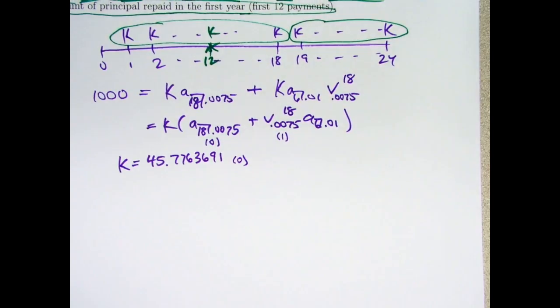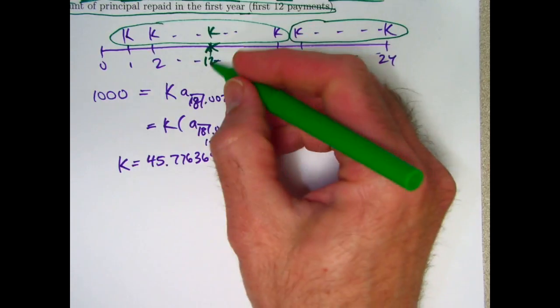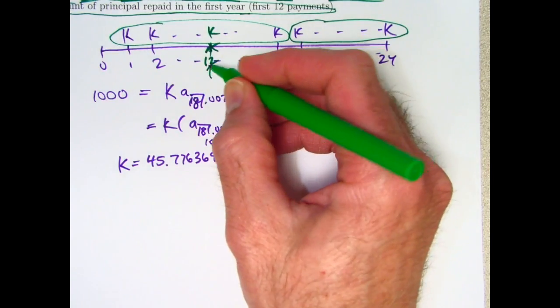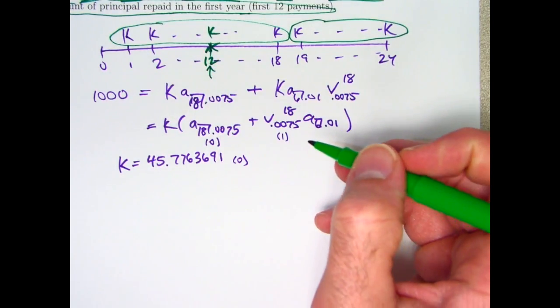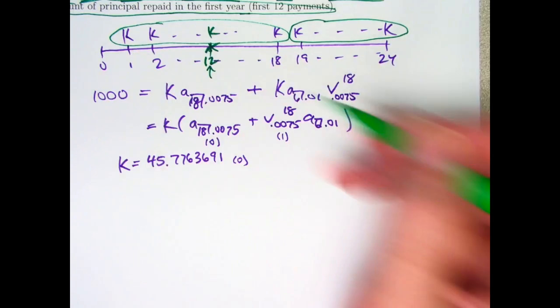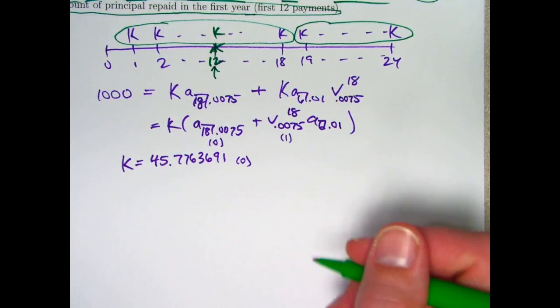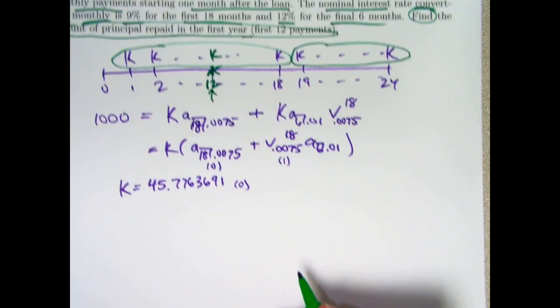Now let's come back to finishing the problem. Again, if we can find the outstanding balance at time 12, just after that 12th payment, we can subtract that number from the loan amount, the $1,000, to find the amount of principal that is repaid during the first year.